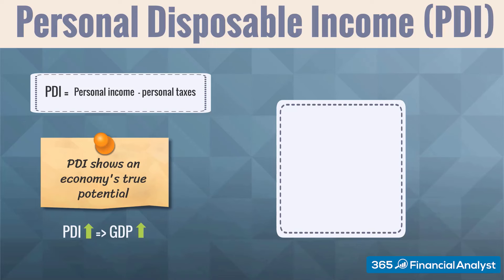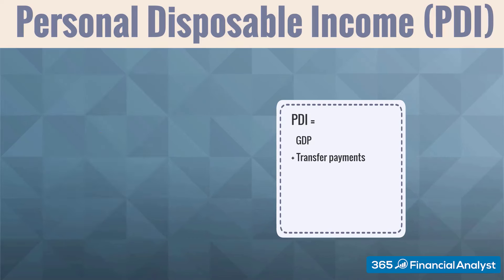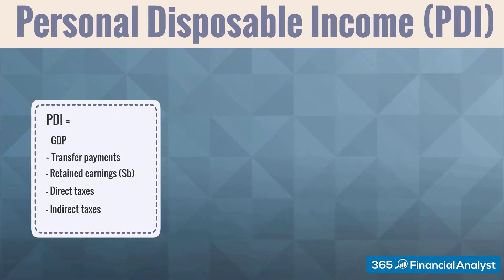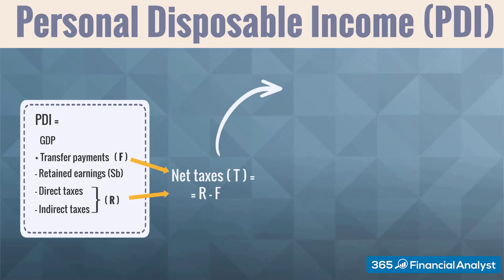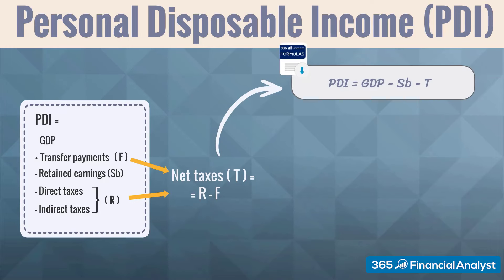To wrap it all up, we may present personal disposable income as GDP plus transfer payments minus retained earnings — savings generated by businesses, SB — minus direct and indirect taxes. If F is the transfer payments paid by the government and R is the sum of direct and indirect taxes received, we may derive the amount of net taxes, T, as R minus F. So, personal disposable income equals the total economic output, or GDP, minus savings generated by businesses SB, minus total net taxes received by the government, T.